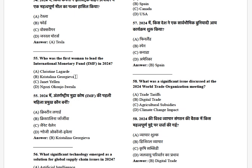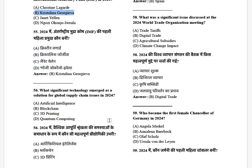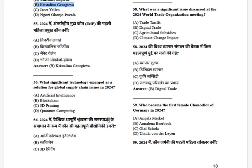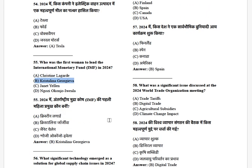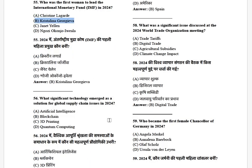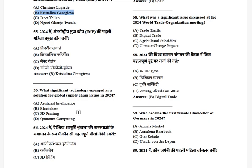What significant technology emerged as a solution for global supply chain issues in 2024? The options are: artificial intelligence, blockchain, 3D printing, and quantum computing. The answer is blockchain.